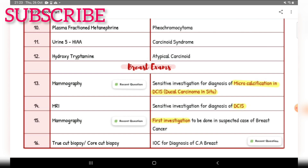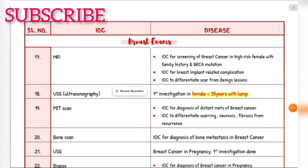First investigation in suspected breast cancer — mammography. Investigation of choice for CA breast — true cut biopsy or core cut biopsy. Investigation of choice for screening breast cancer in high-risk female with family history and BRCA mutation — MRI. Investigation of choice for breast implant-related complication — MRI. Investigation of choice to differentiate scar from benign lesions — MRI. First investigation in female less than 35 years with a lump — ultrasound. Investigation of choice for diagnosis of distant metastasis of breast cancer — PET scan.